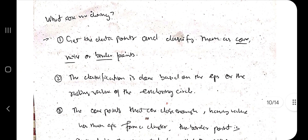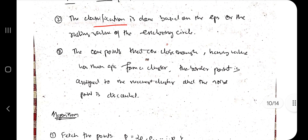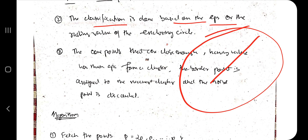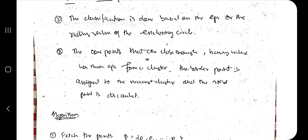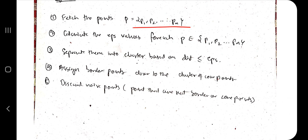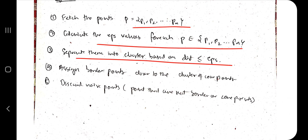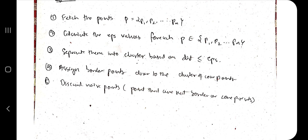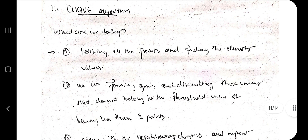DBSCAN stands for Density-Based Spatial Clustering. Get the data points and classify each as a core point, noise point, or border point based on the eps (radius) value. Remove noise points, assign core points as the major cluster centers, and assign border points to the nearest cluster. The result is clusters formed based on density rather than distance alone.